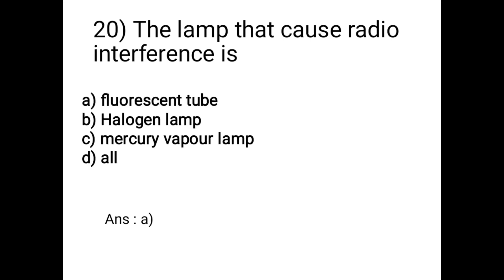Question 20: The lamp that causes radio interference is: A - fluorescent tube, B - halogen lamp, C - mercury vapor lamp, D - all. The correct answer is option A: fluorescent tube causes radio interference.